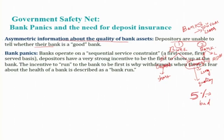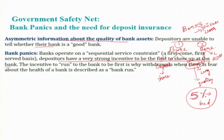Depositors have a very strong incentive to be the first to show up at the bank. The incentive to run to the bank to make withdrawals when there is fear about the health of the bank is described as a bank run. When this rumour spreads, bank panics spread — depositors will run to the bank to withdraw their deposits as early as possible, leading to a bank run.